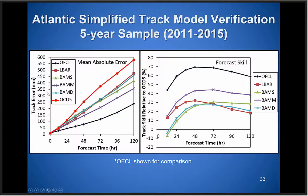The diagram on the left shows mean absolute track error over the last five years in the Atlantic Basin, and the right shows skill. The official forecast in black has much lower error relative to simple models — the BAMs, L-bar, and climatology and persistence. The official forecast shows 60 to 70 percent skill relative to CLIPER versus the simple models showing only about 20 to 40 percent skill in the Atlantic Basin.